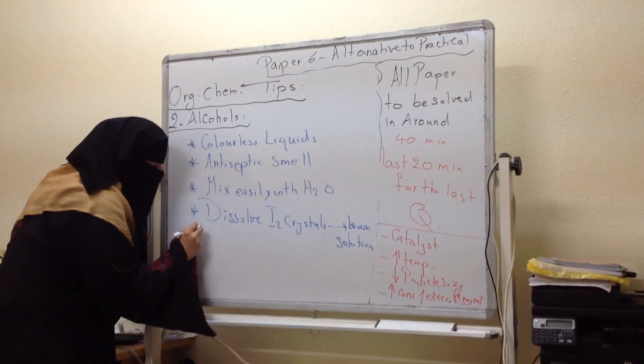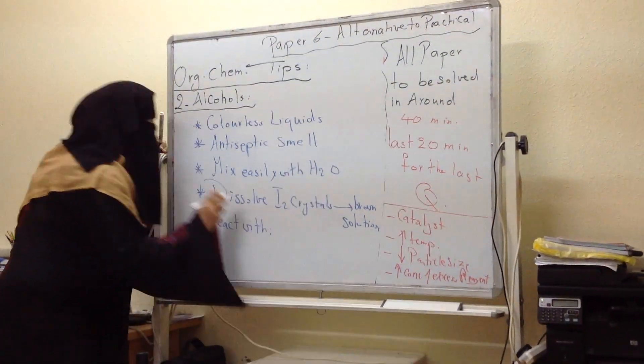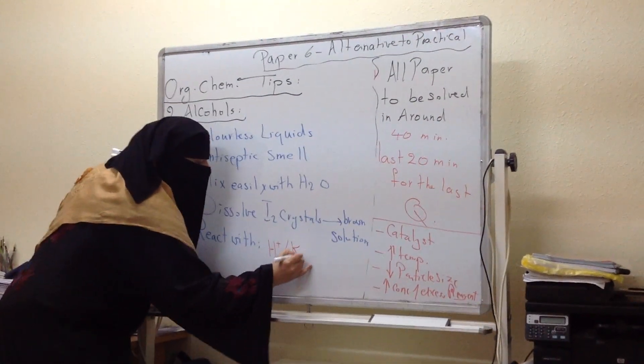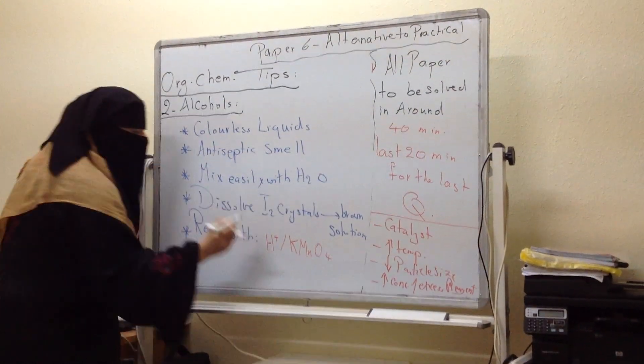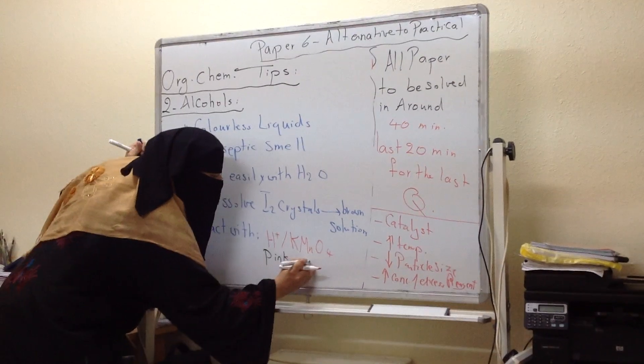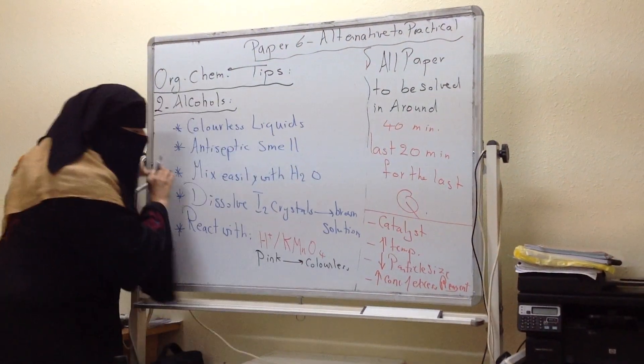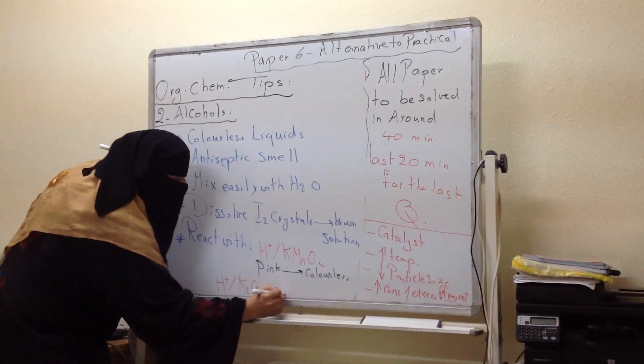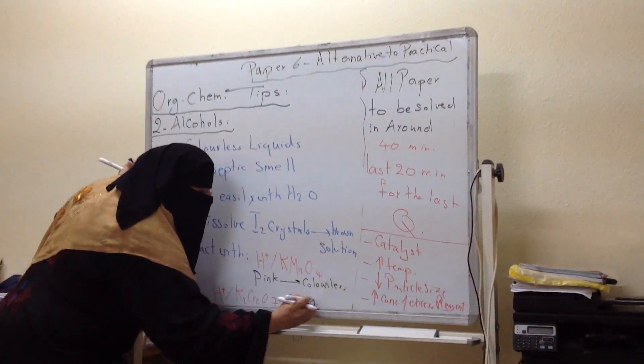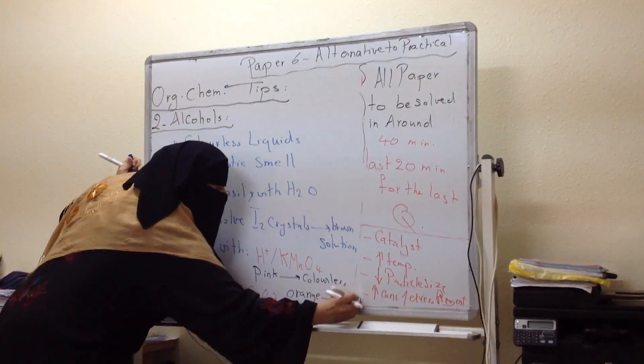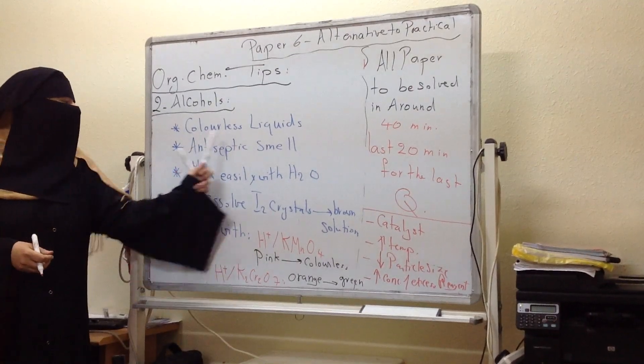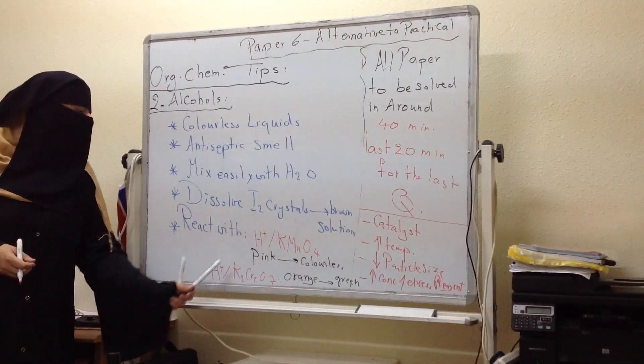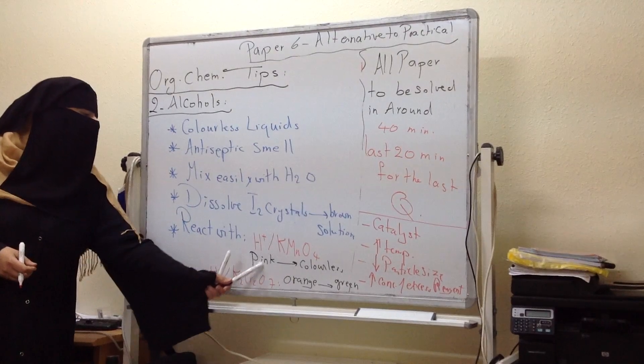Also, they react with - this is very important, this is a very distinctive test for alcohols. Alcohols react with acidified potassium manganate and give color change from pink to colorless. Also, they react with acidified potassium dichromate, color from orange to green. So alcohols again are colorless liquids, they have antiseptic smell, easily mixed with water, dissolve iodine crystals to form brown solution, react with acidified potassium manganate and dichromate. With manganate, color change from pink to colorless. With dichromate, from orange to green.